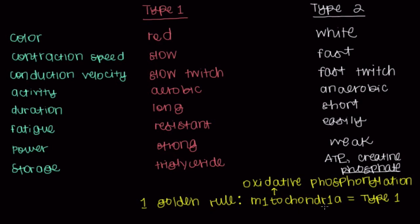By using this one golden rule — that mitochondria are more prevalent in type 1 muscle fibers — we can figure out the whole table and understand the difference between type 1 and type 2 muscle fibers.